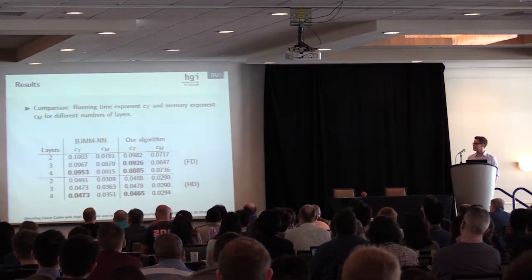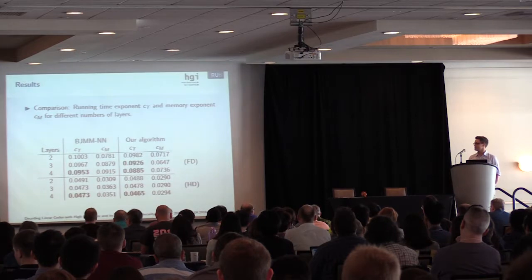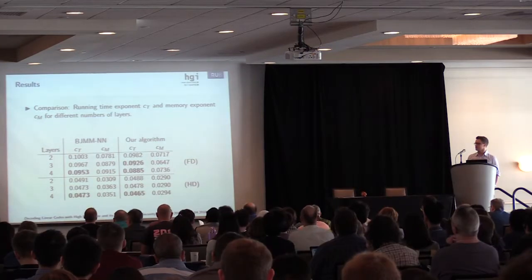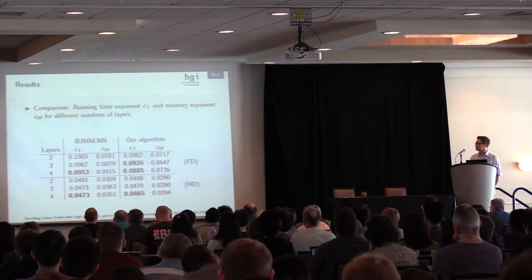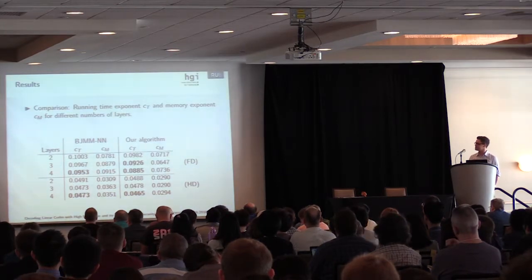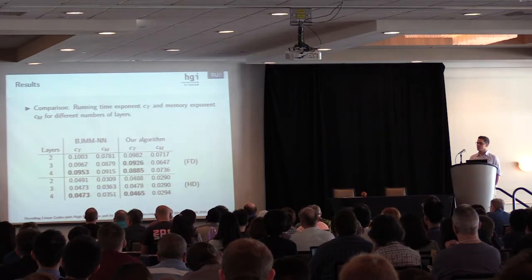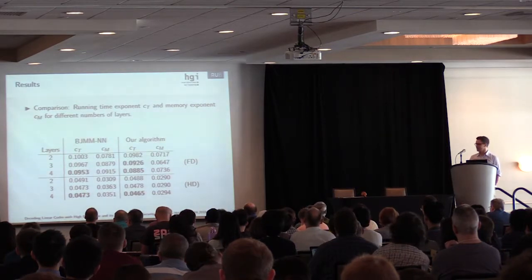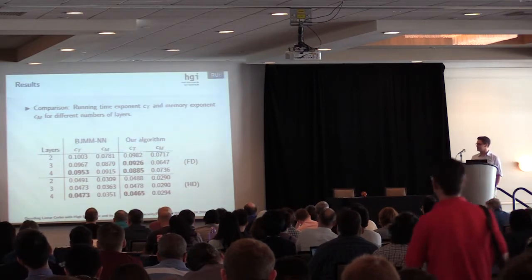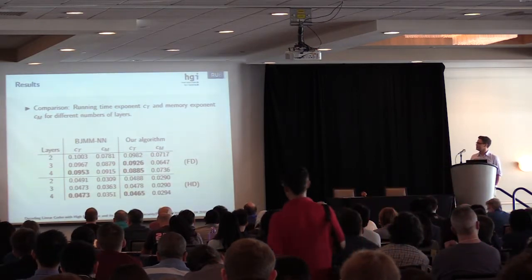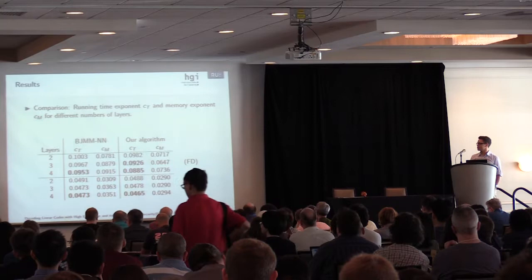But here we don't really know if four layers is optimal because for five layers the algorithm has so many parameters we weren't able to optimize it anymore. So this is an open problem, perhaps to simplify our algorithm to reduce the number of parameters so that one can optimize it for even more layers and maybe get even better running times. The same holds for the half-distance decoding case where we beat the BJMM with nearest neighbors with four layers.